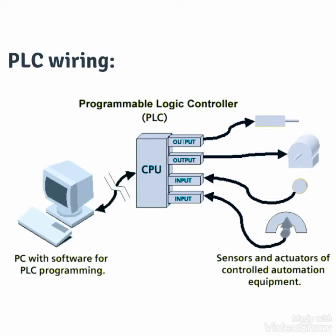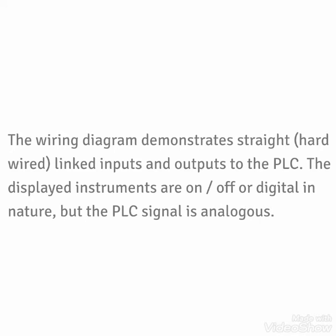Here you can see the PLC wiring. This is the programmable logic controller PLC — the CPU output is giving output to the equipment, and sensors and other inputs are given by the input module, and then the CPU is communicating with the display. The wiring diagram demonstrates a straight hardwired link of inputs and outputs to the PLC. The displayed instruments are on/off or digital in nature, but the PLC signal is analog.